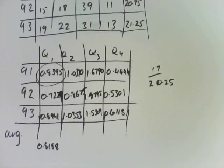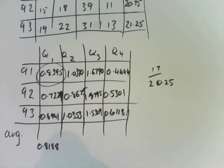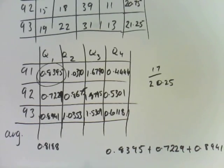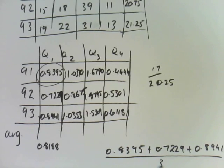There's my first one. I work that out by doing 0.8395 plus 0.7229 plus 0.8941 and dividing all of that by three because there are three values. That gives you that value there. So I'm going to go and work out the seasonal index for each of the remaining quarters and then I'll come back.